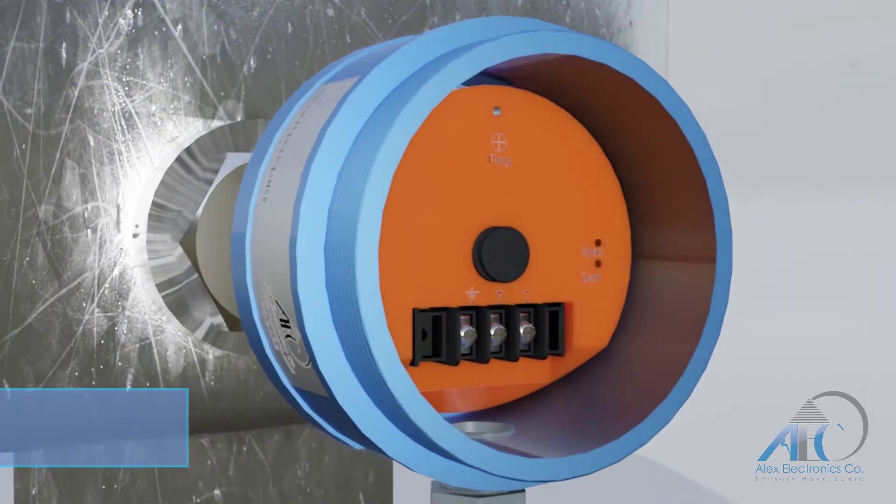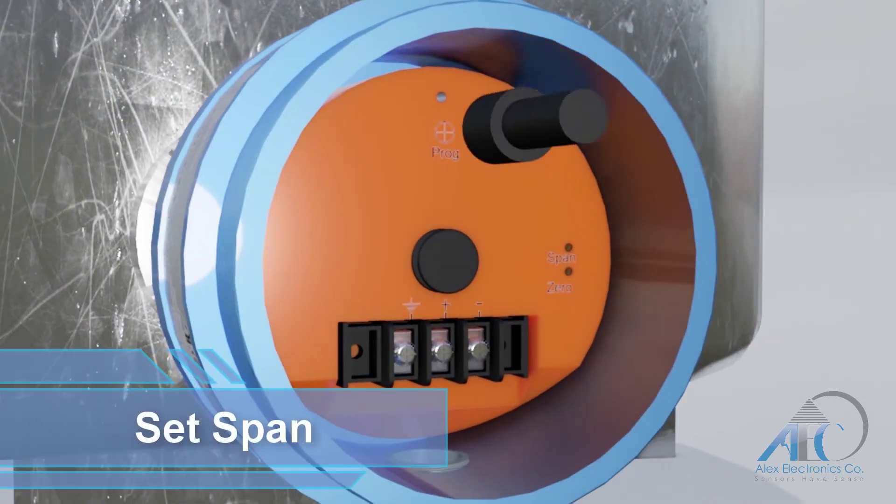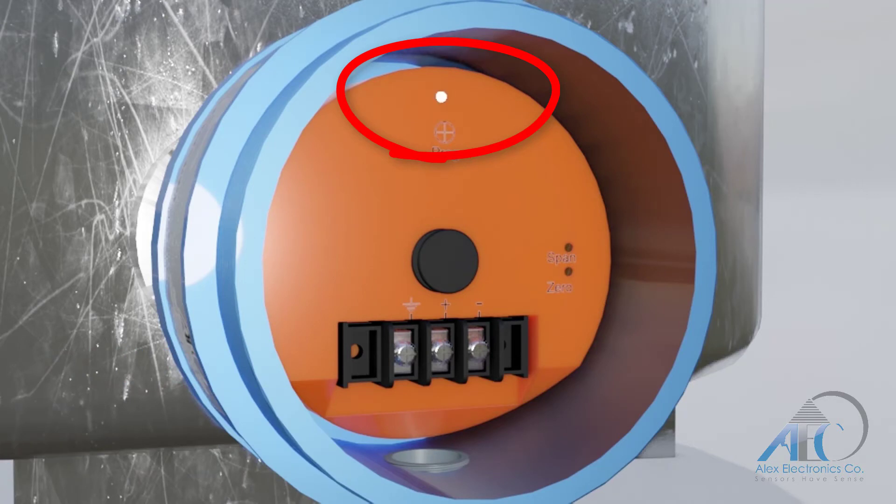To calibrate the span put the magnetic pen near the program circle for about two seconds until the LED starts flashing then remove the pen immediately.